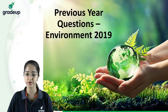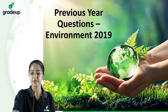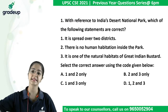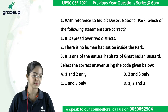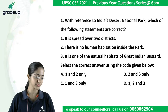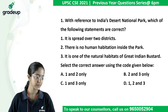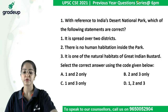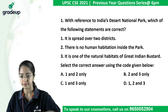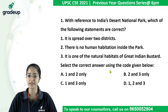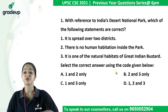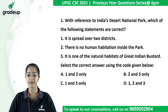You can see on your screen the very first question which talks about India's Desert National Park. It asks which of the following statements are correct about it. First: it is spread over two districts. Second: there is no human habitation. Third: it is one of the natural habitats of the Great Indian Bustard. What do you think?